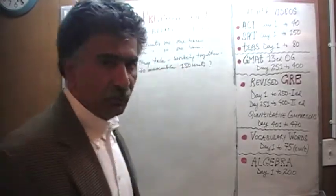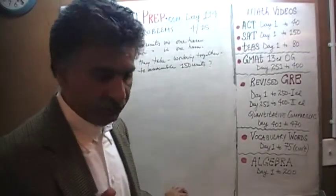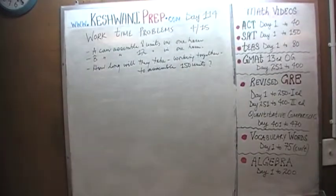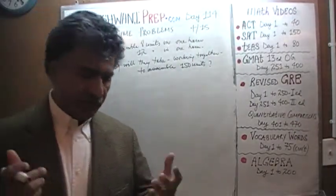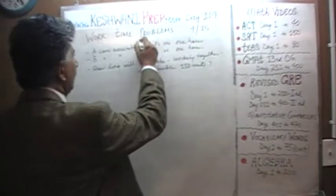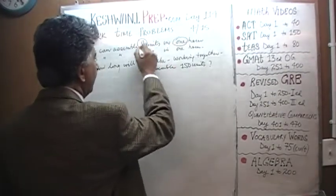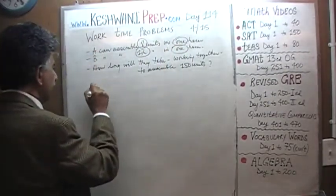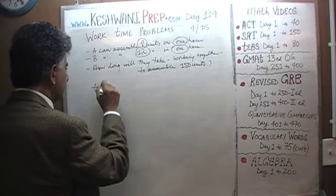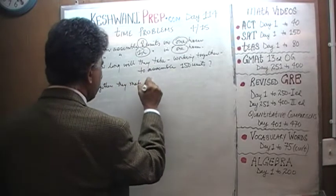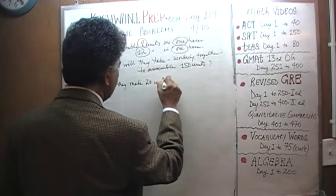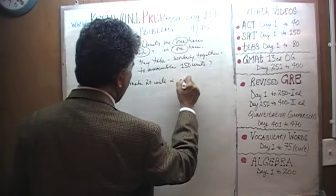It's a quite straightforward, simple problem. This guy can do 8 units in one hour; the other guy can get 12 units in one hour, which means together they make 20 units in one hour.